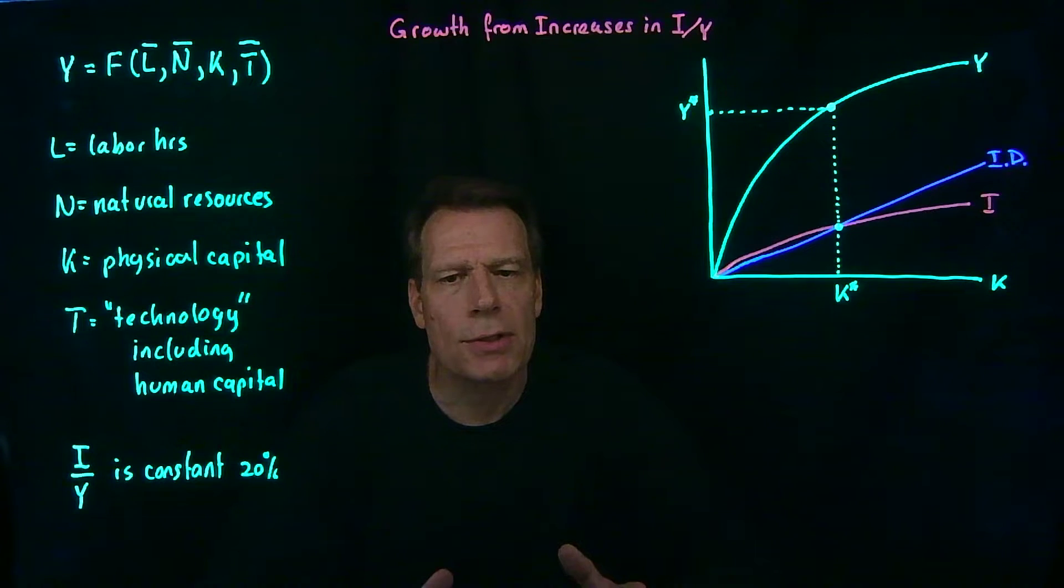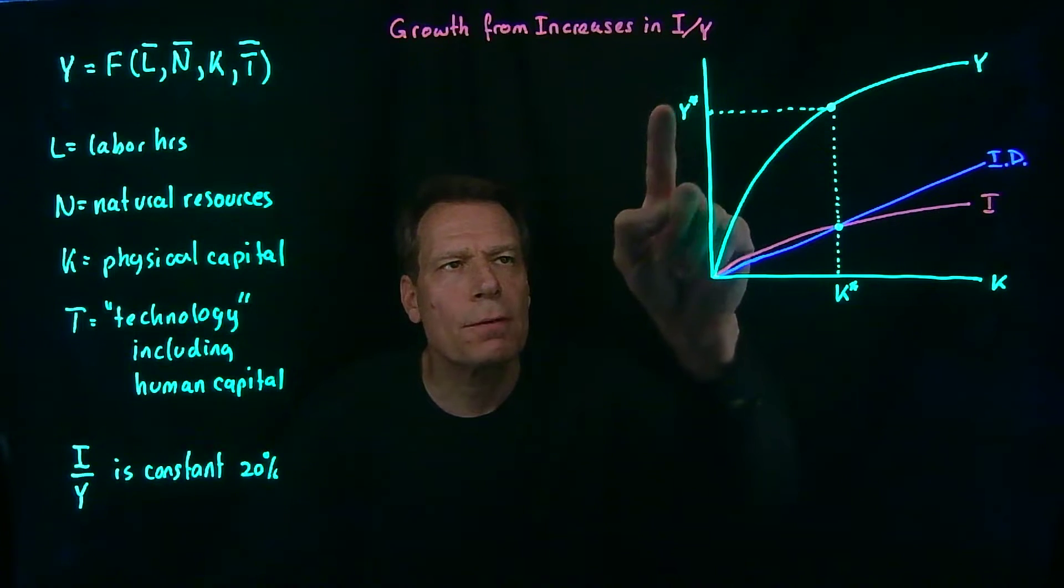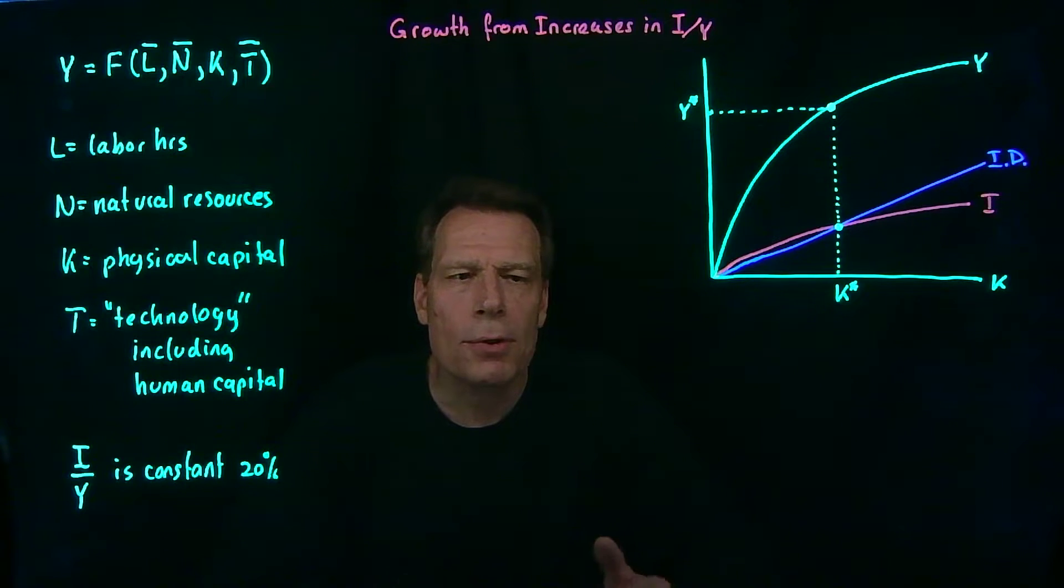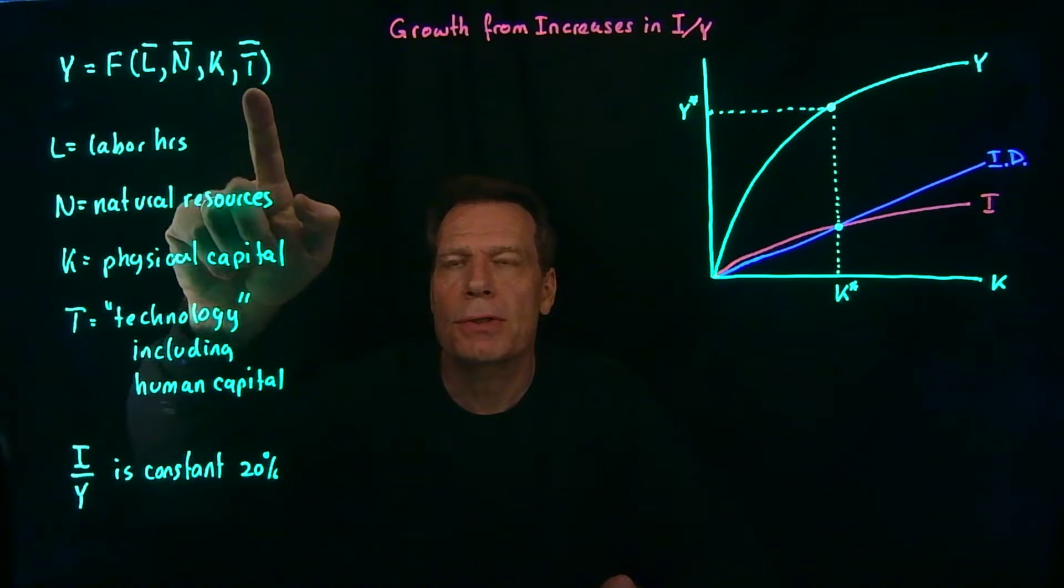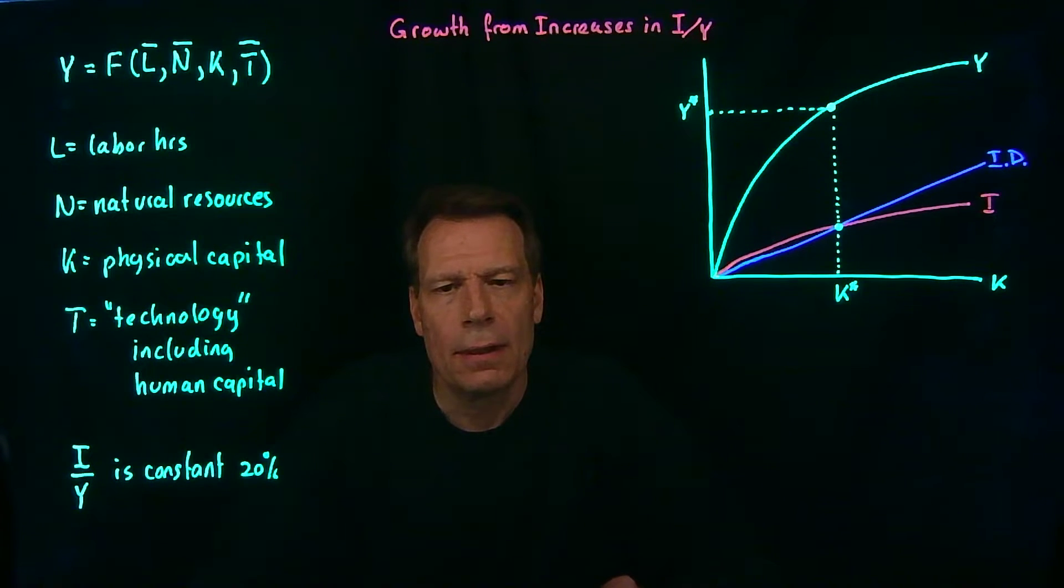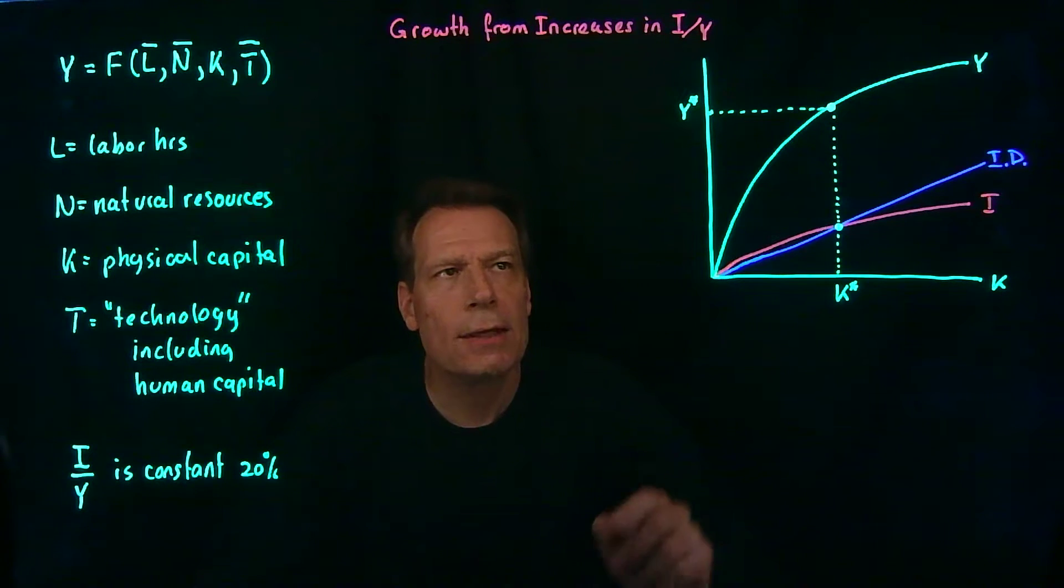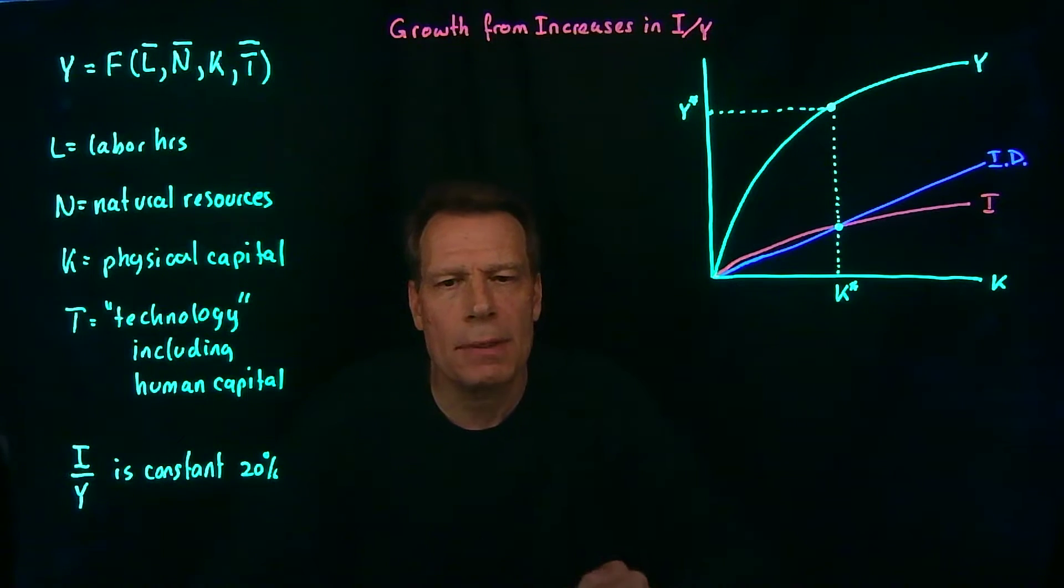We've now built a model that tells us the long-run natural level of GDP that'll emerge from the steady-state level of capital in an economy where we hold labor, natural resources, and technology fixed. But we don't yet see any economic growth in that model, any growth in the natural level of GDP. For economic growth to emerge, something else has to change.